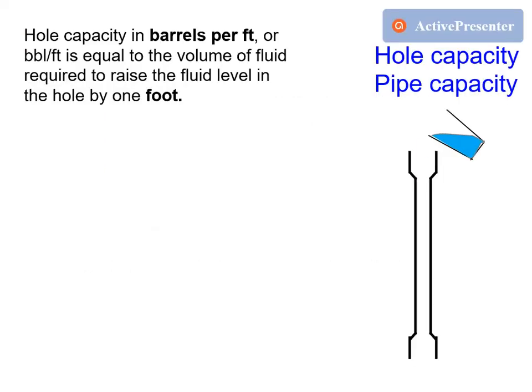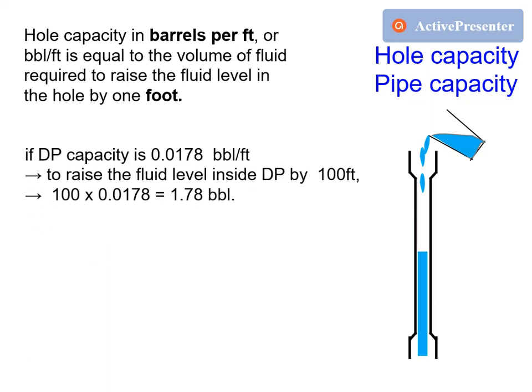Hole capacity in barrels per foot is equal to the volume of fluid required to raise the fluid level in the hole by 1 foot. If a known drill pipe capacity is 0.0178 barrels per foot, then to raise the fluid level inside the drill pipe by 100 feet, we would need 1.78 barrels of fluid.